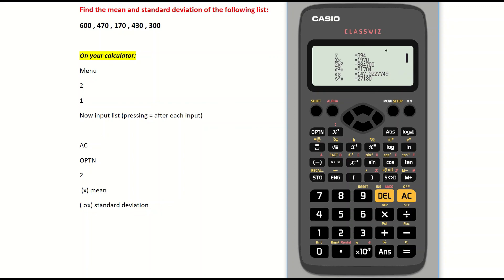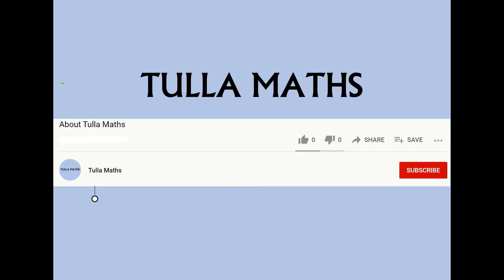And that is how to find the standard deviation and the mean on the new Casio calculator. Thank you for watching another tutorial video from Tullamaths. Make sure to subscribe.